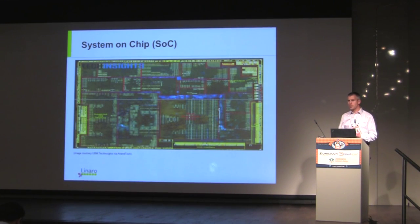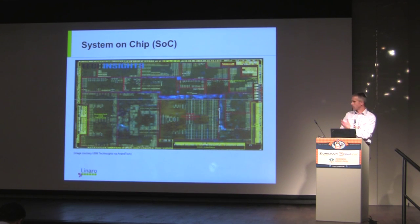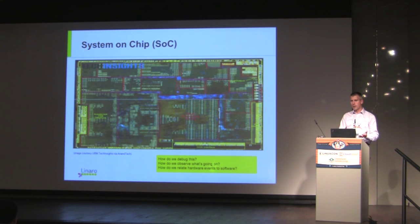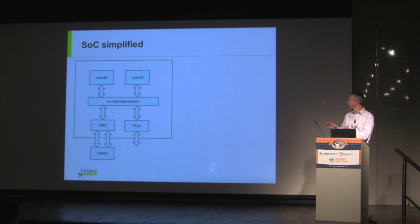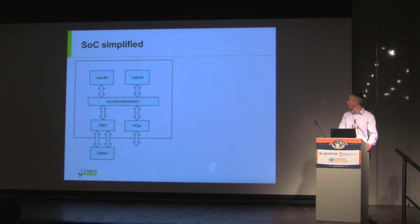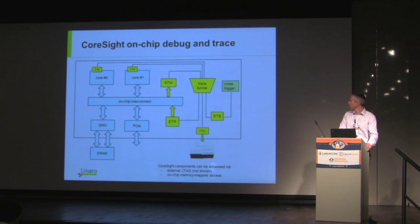CoreSight is developed to solve the problem of understanding what goes on on one of these — a system-on-chip. We want to observe what's going on and capture information that allows us to debug problems. We've got several cores, probably talking over some kind of on-chip interconnect to memory and to various off-chip peripherals. What we do is put some on-chip instrumentation onto this.